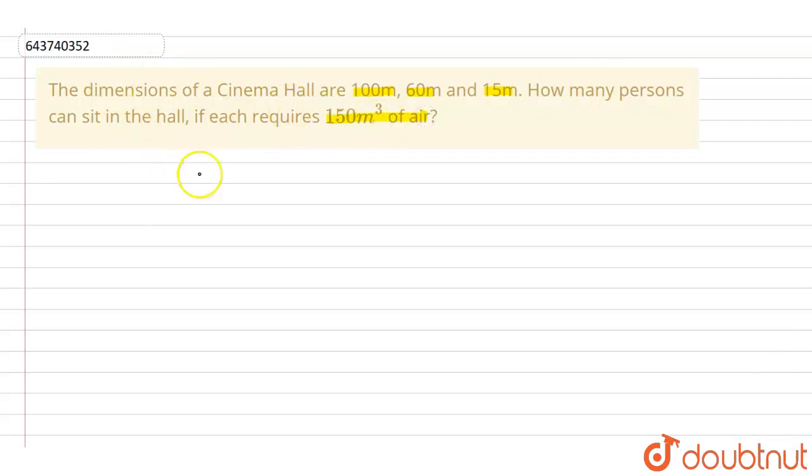According to the question, the length of cinema hall is 100 meters, the breadth of cinema hall is 60 meters and the width of cinema hall is 15 meters.